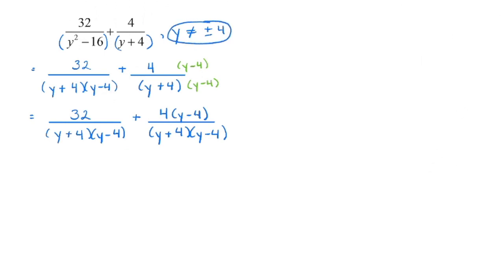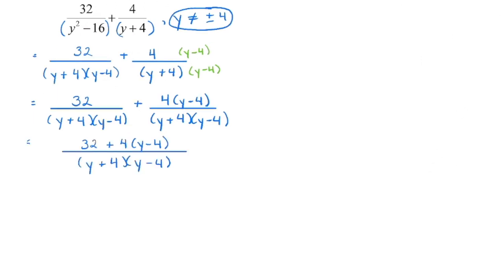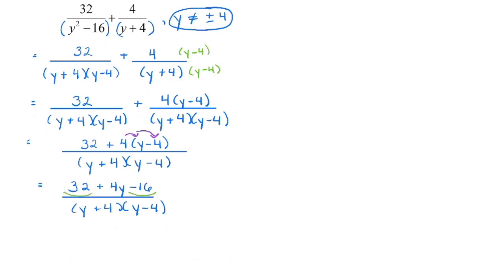We're going to bring them together over a common denominator and then simplify the numerator. Remember, you are not canceling anything — we have to first add the numerators, and we don't cancel until the very end. So we're going to get rid of the brackets by distributing the 4, which gives us 4y minus 16. Then we take a look for like terms: 32 minus 16 is 16, and we still have 4y. The denominator just keeps being carried down.